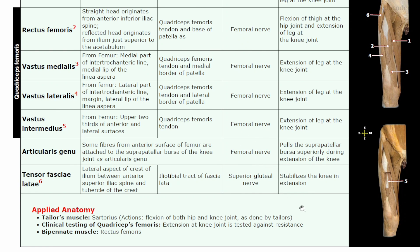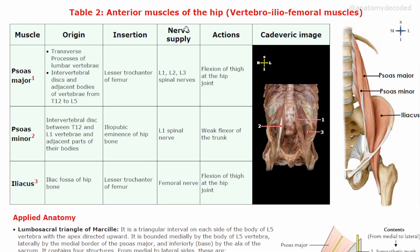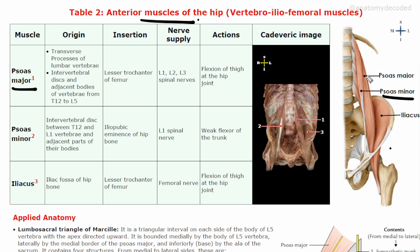Now let's cover the muscles in the anterior aspect of the hip. In many books these are not given as a separate compartment because the chief bulk of these muscles is seen in the posterior abdominal wall and pelvic wall — only their tendons come down into the lower limb. However, they have major action at the hip joint. Psoas major is one muscle; there is also psoas minor and one muscle in the iliac fossa called iliacus.